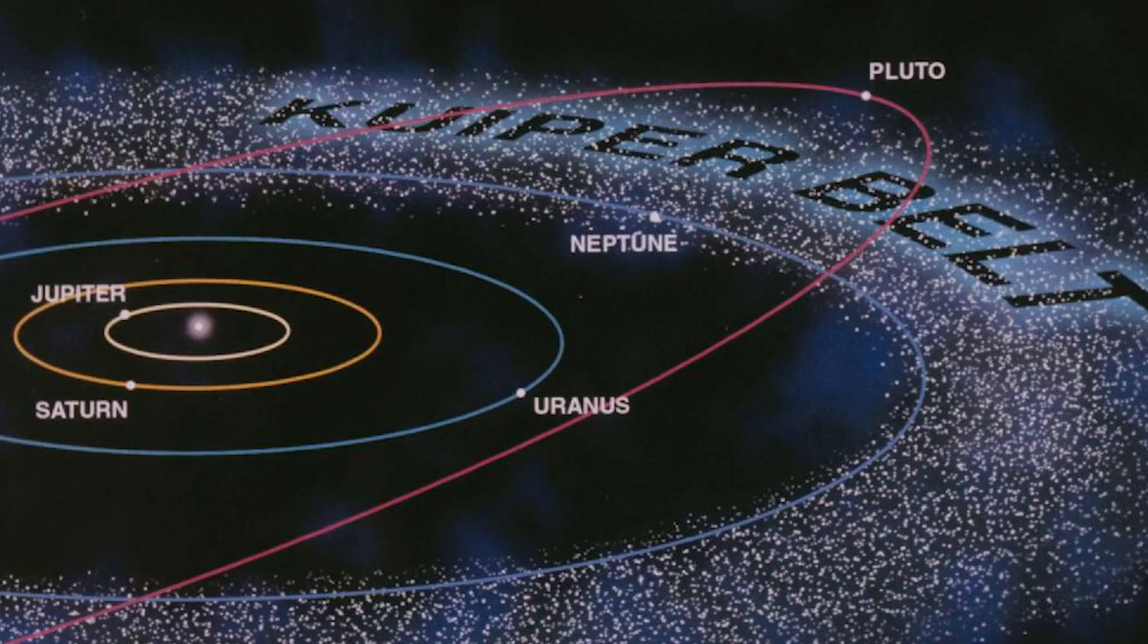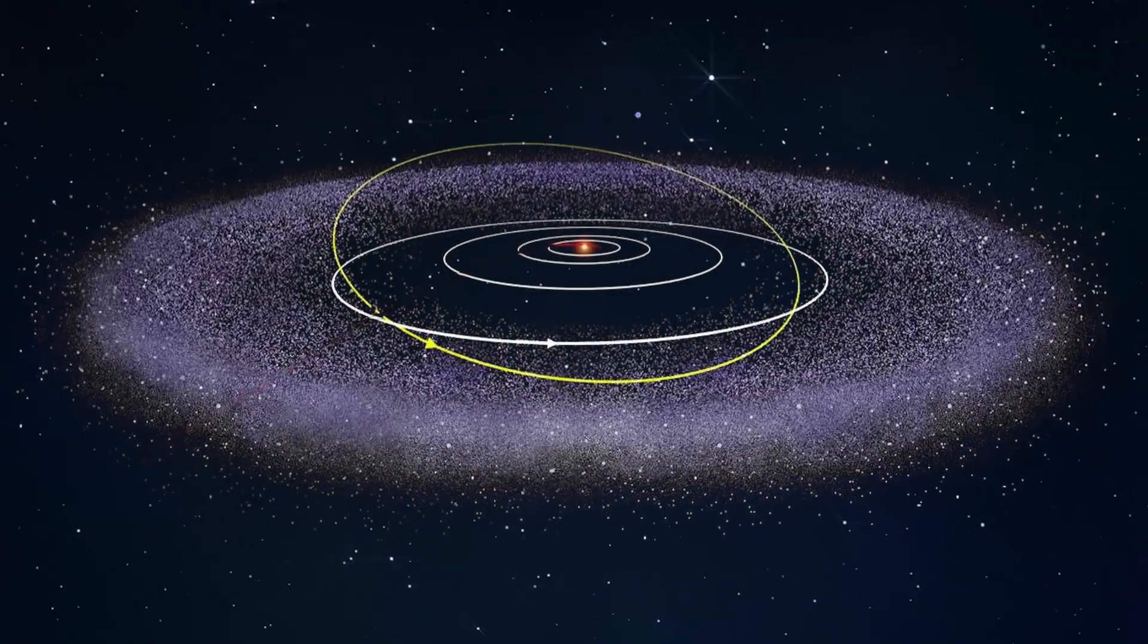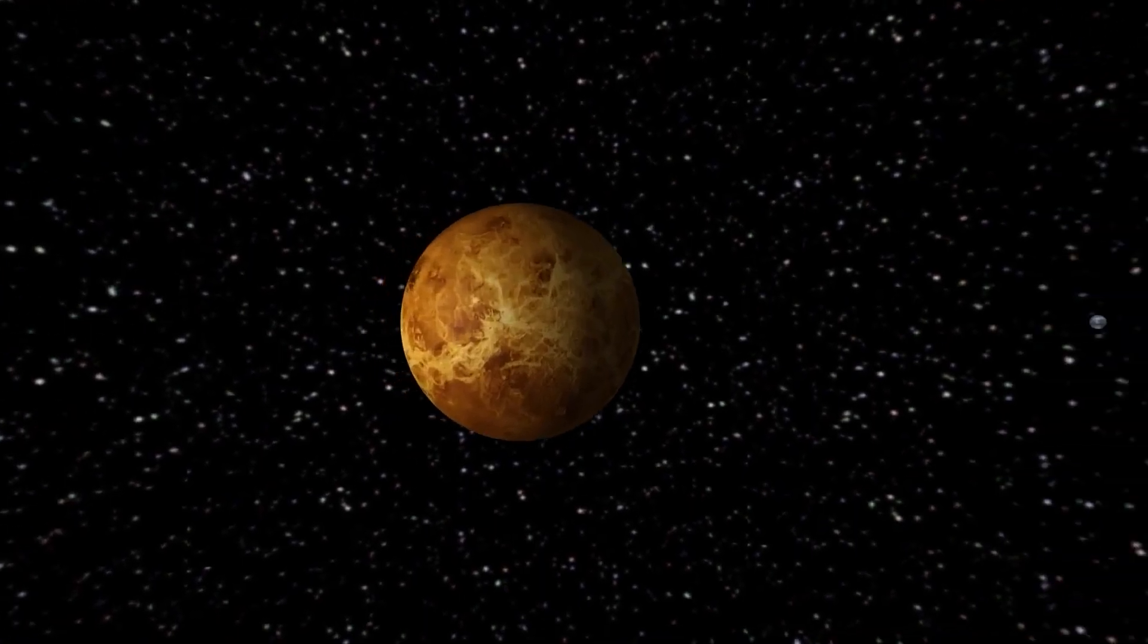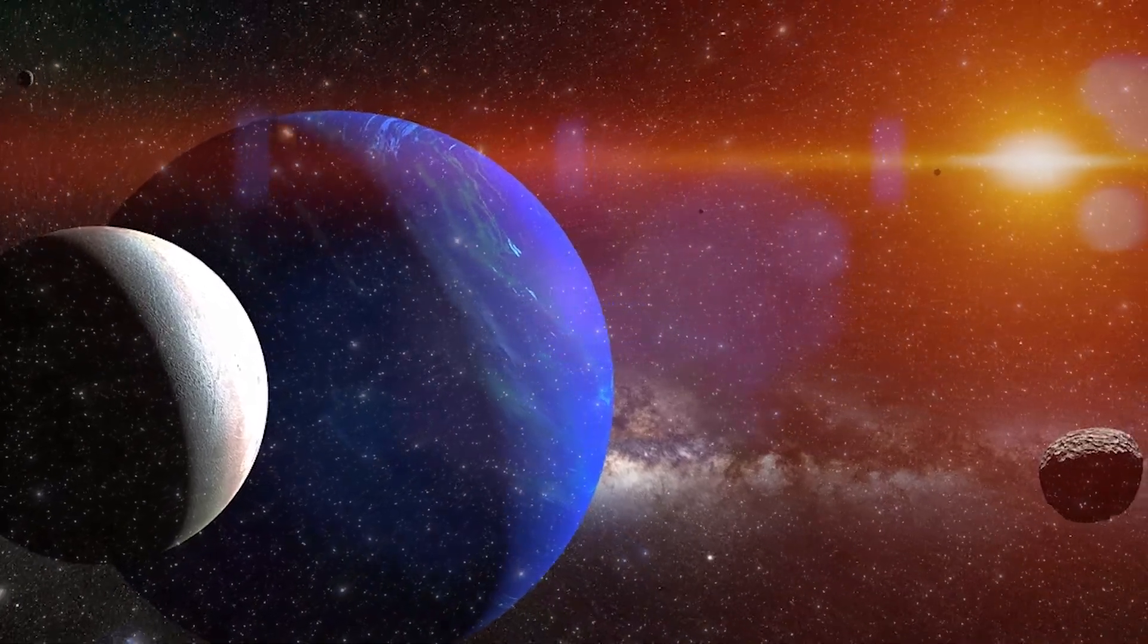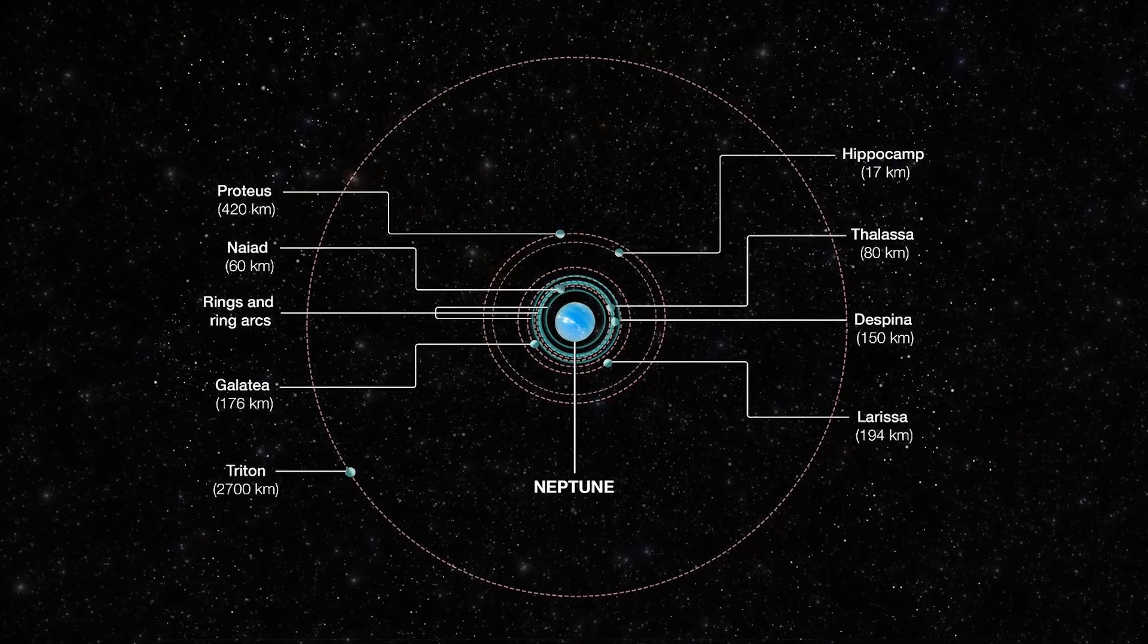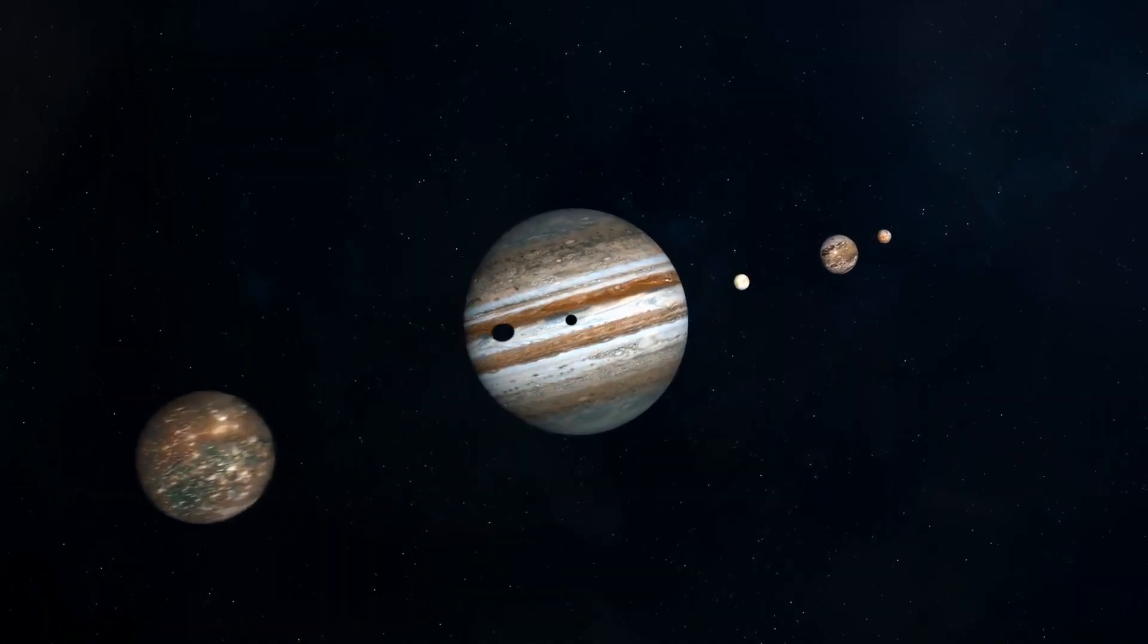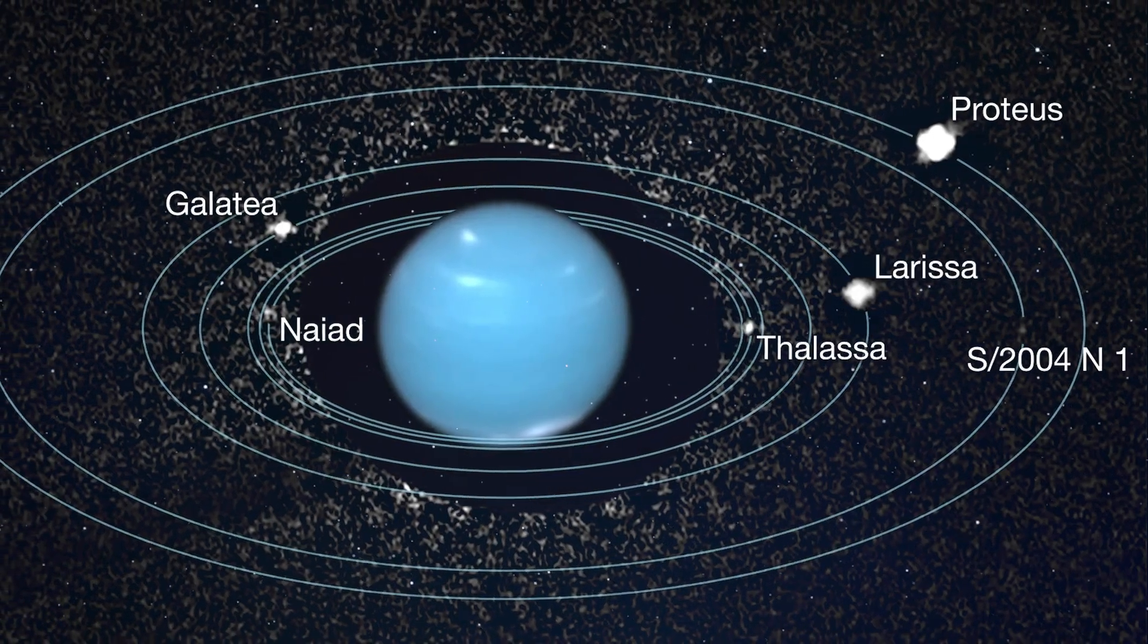Scientists speculate that Triton did not originate alongside Neptune, but instead evolved in the Kuiper Belt. The Kuiper Belt is a region filled with small and large objects, including dwarf planets like Pluto. At some point, Neptune's gravitational pull captured Triton, causing it to slow down and prevent a collision with the planet. Triton's capture also disrupted the formation of more and larger moons around Neptune. Unlike Jupiter, which boasts nearly 70 satellites, Neptune has a limited number of moons.